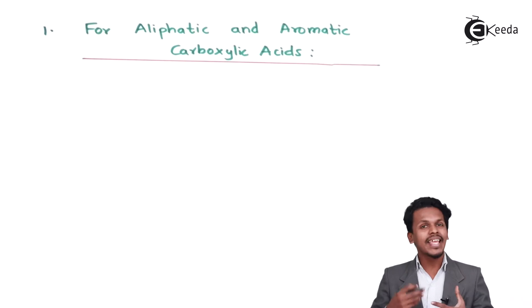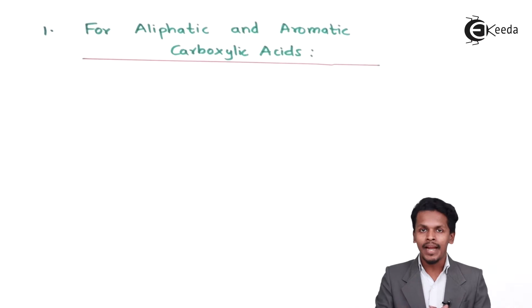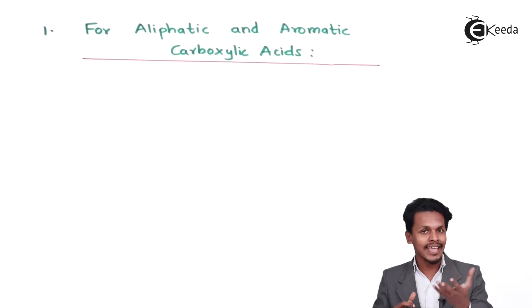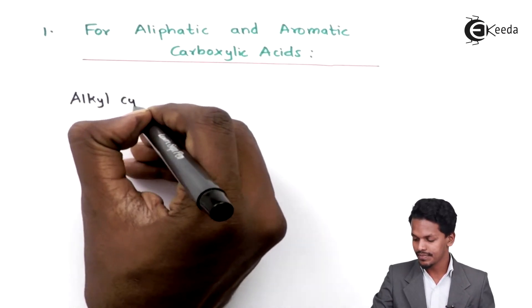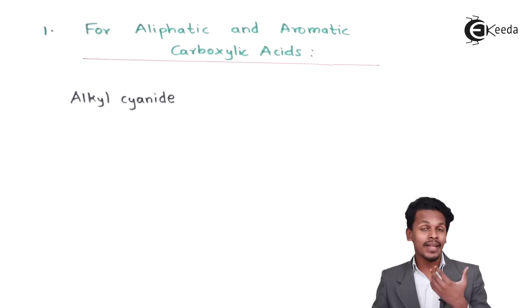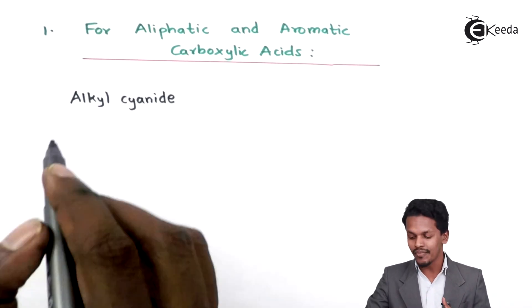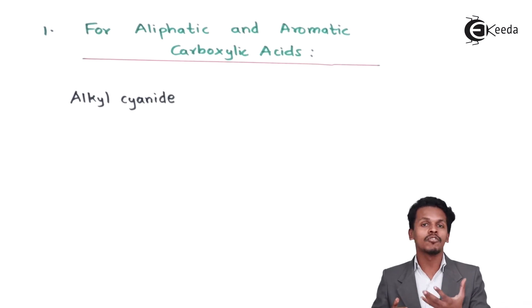We can prepare aliphatic as well as aromatic carboxylic acid using certain chemicals. Starting with the first method: if we have alkyl cyanide, or an aromatic cyanide, and it undergoes hydrolysis, we can obtain carboxylic acid. So from alkyl cyanide we can easily prepare an aliphatic or an aromatic carboxylic acid.